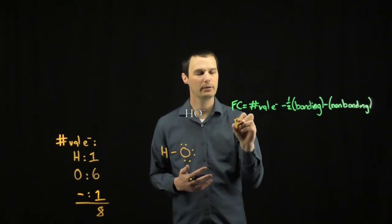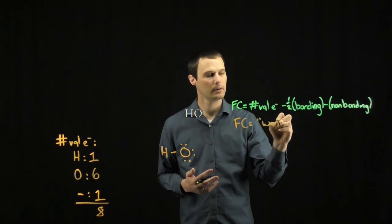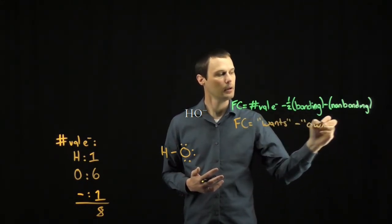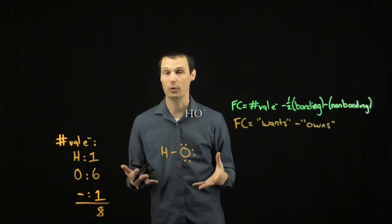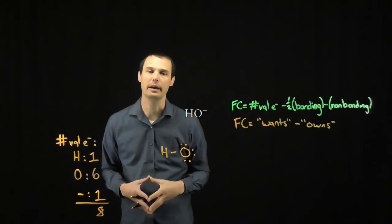I like to use a mnemonic when calculating formal charge, that the formal charge equals once minus owns, where once is the number of valence electrons it wants in a neutral ground state, and owns is the number of electrons it actually has, half the bonding and all of the non-bonding.